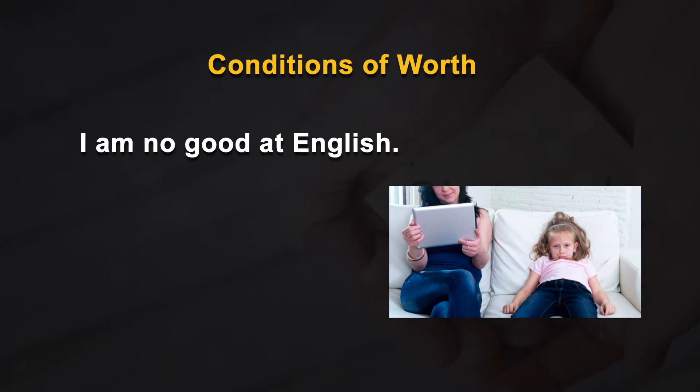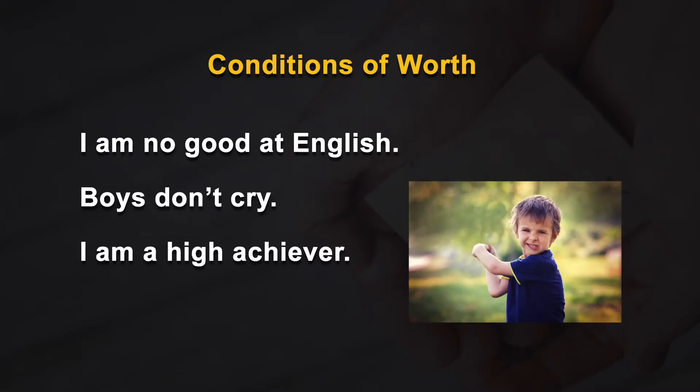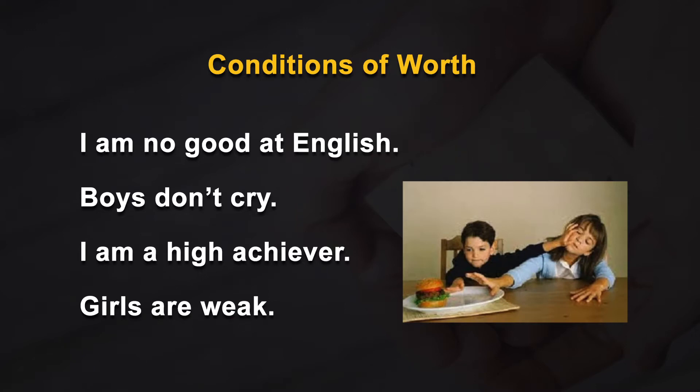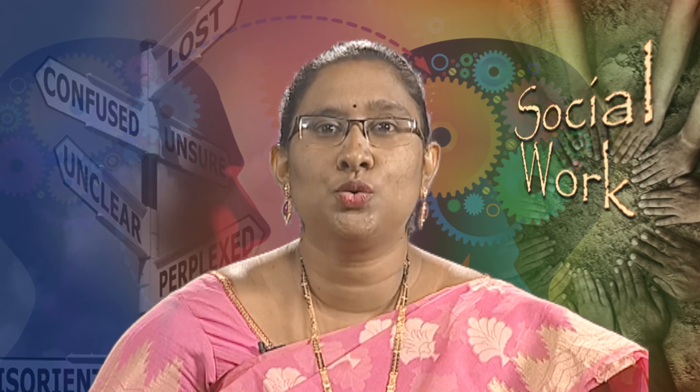They start intentionally avoiding such behavior which may personally satisfy them. They are not functioning freely. 'I am not good at English,' 'boys do not cry,' 'I am a high achiever,' and 'girls are weak' are simple examples of introjected values which restrict individuals' development of self-concept. They will start perceiving further experiences in this restricted or distorted way. Their ideal self will consist of many distorted perceptions which may not be achievable and leads to emotional and anxiety problems.